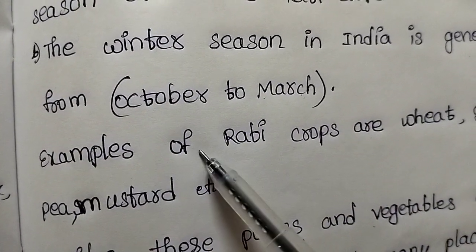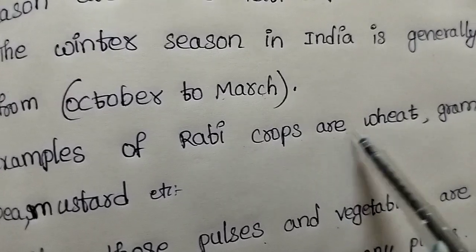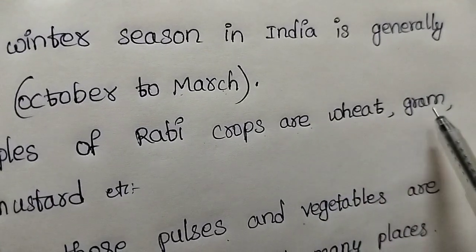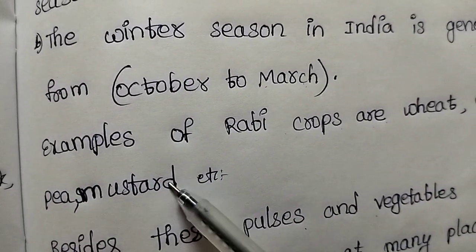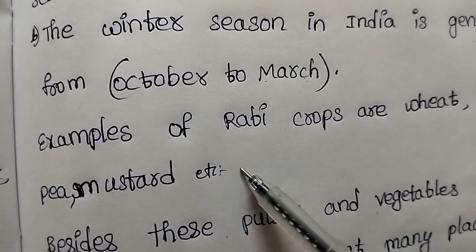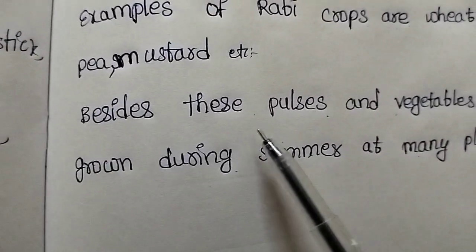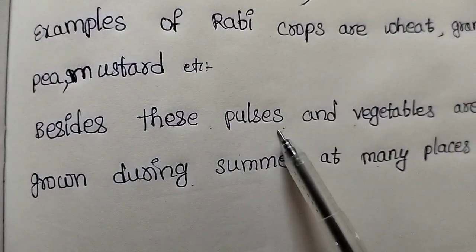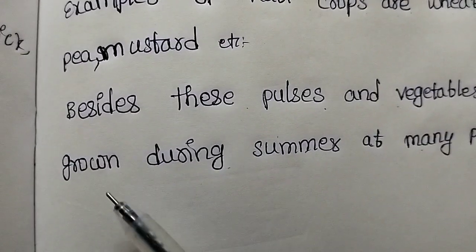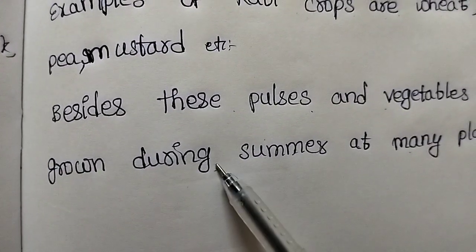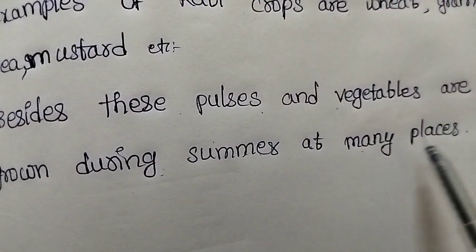Examples of Rabi crops are Wheat, Gram, Pea, Mustard, etc. Besides this, Pulses and Vegetables are grown during summer at many places.